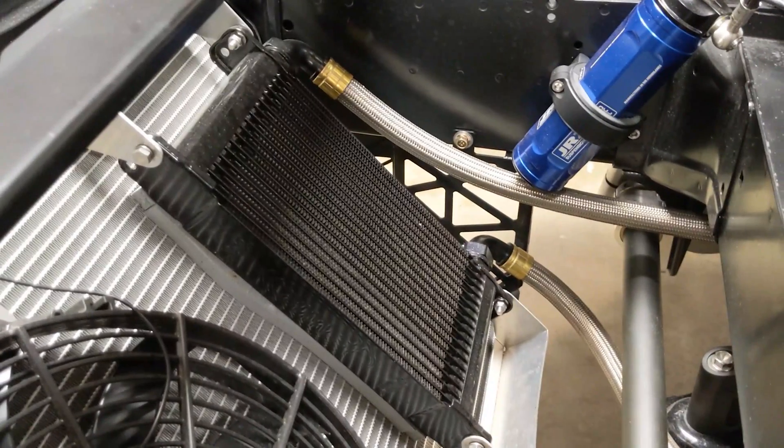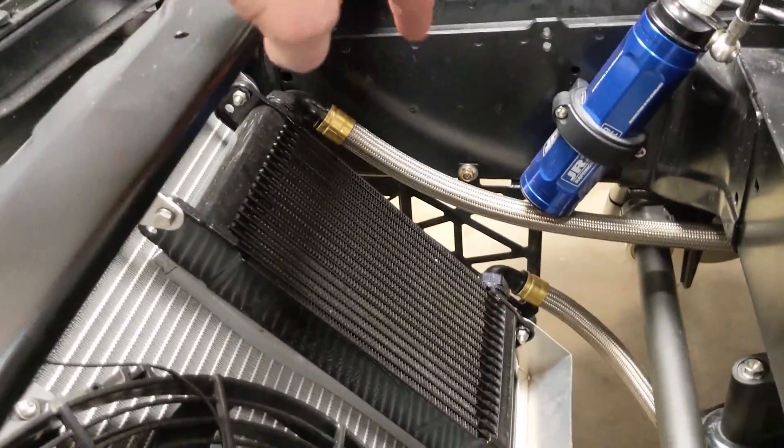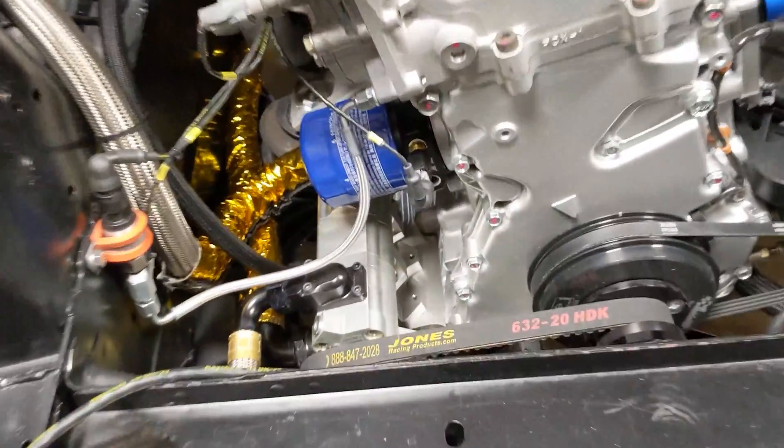From the research I've done, you can do either or. It doesn't really matter. But so those lines there are just dash 12. And I stuck with the stainless braided hose just because that's what the feed line needed to be for the vacuum rating.